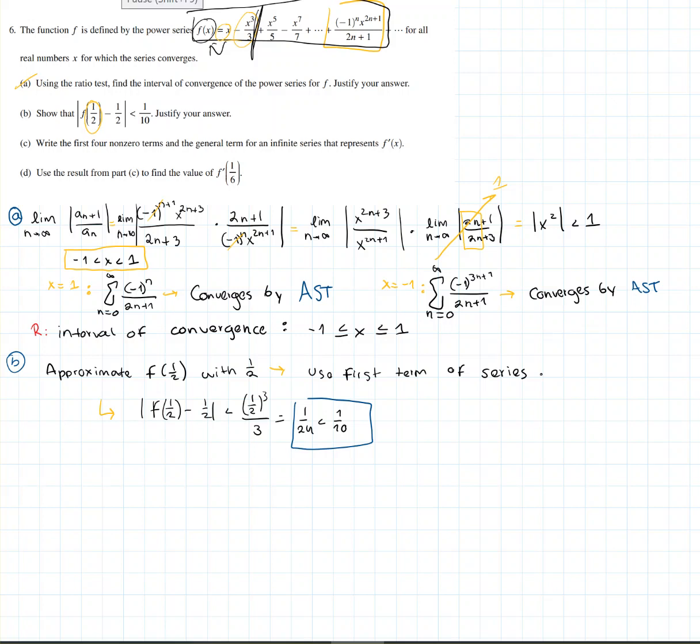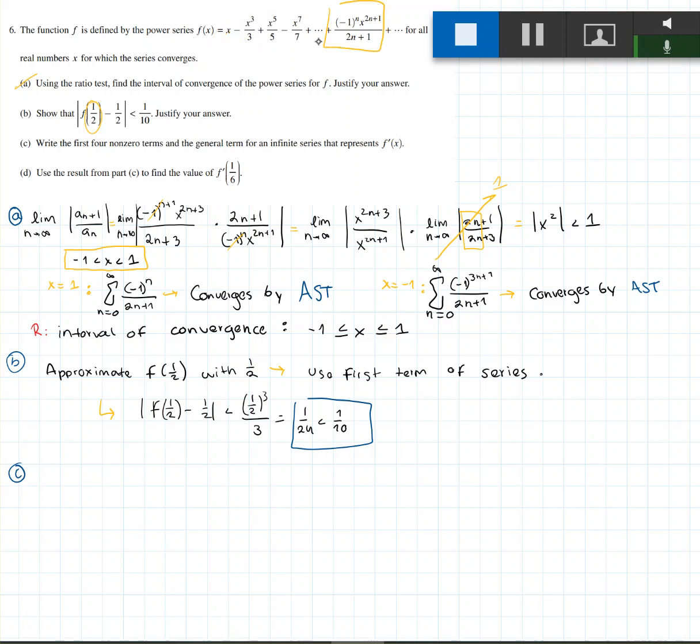Now for part c, we're just asked to write the first four non-zero terms and the general term for an infinite series that represents f'(x). While we're writing f(x), it's literally our top part. It's literally this is f(x), so to find f'(x), we just take the derivative of each term, including the general term, which we can also find by just seeing our equation of f'.